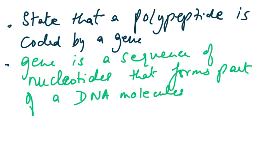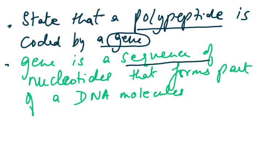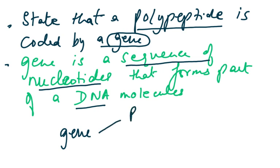The exact wording used in the syllabus states that a polypeptide is coded by a gene. So proteins are coded by a gene. But then what is a gene? A gene is a sequence of nucleotides — not a sequence of bases, please remember — a sequence of nucleotides that form part of a DNA molecule. The latest definition of gene, which you must remember for your A2, is that it codes for proteins.